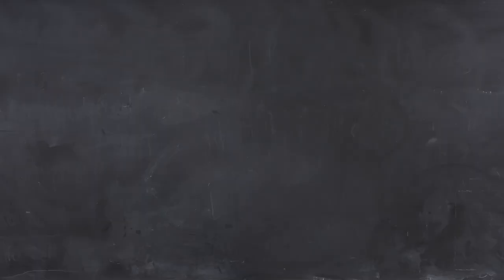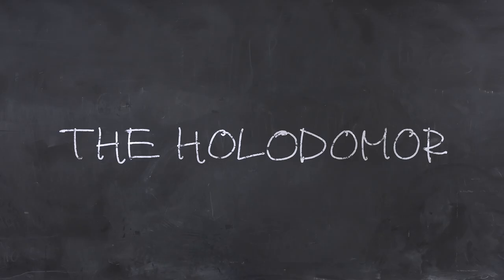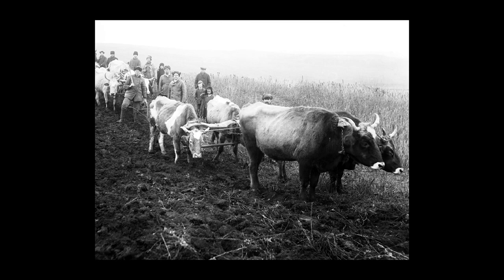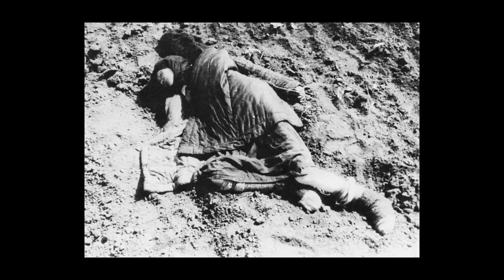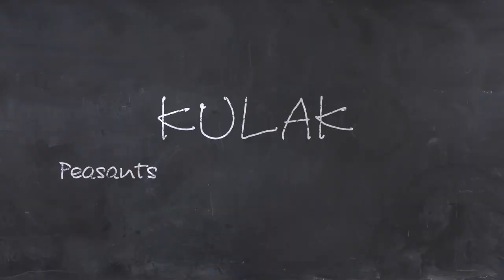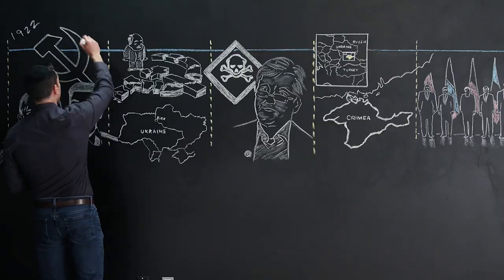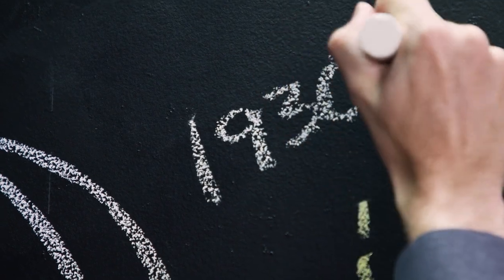The most obvious example is the Holodomor, the Ukrainian famine. This was created by Stalin in an attempt to industrialize Russia. He seized basically all of the property in Ukraine, collectivized the farms, killed anyone who stood in his way, and liquidated the kulaks. Somewhere between 4 and 10 million people were starved and murdered during the Holodomor, which began in the early 1930s and lasted several years.